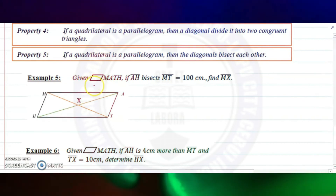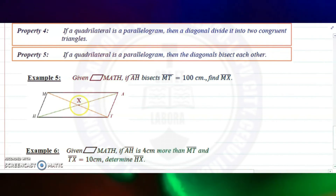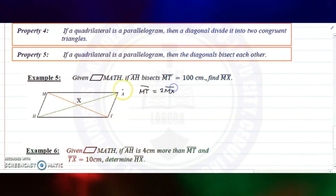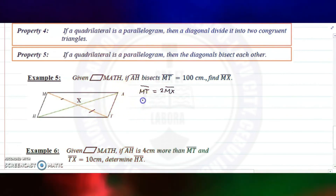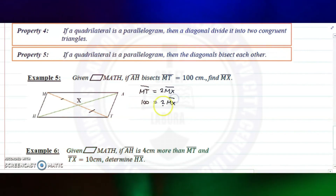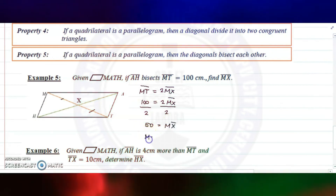Example number five: given parallelogram MATH, if AH bisects MT and MT equals 100 centimeters, find the measure of segment MX. Using property five, MT equals 2 times MX since MX equals XT. Substituting: 100 equals 2 times MX, so MX equals 50 centimeters.